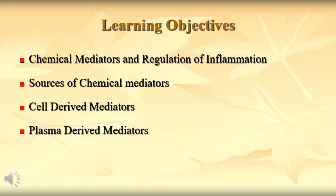What are the sources of chemical mediators which are involved in acute inflammation? There are two sources: cell-derived mediators and plasma-derived mediators. How they act and what role they are playing in acute inflammation — all of that will be discussed.